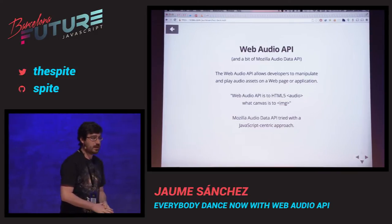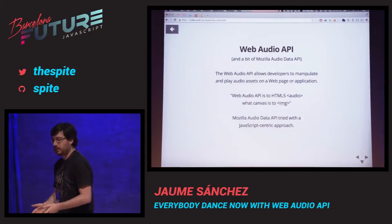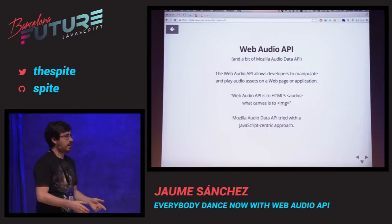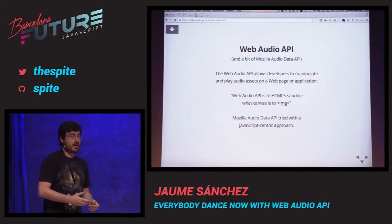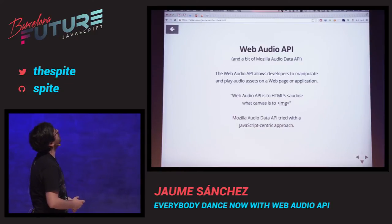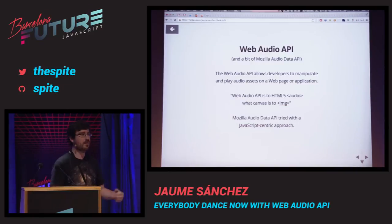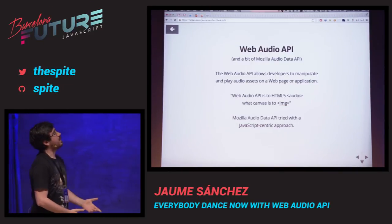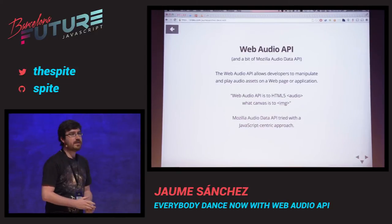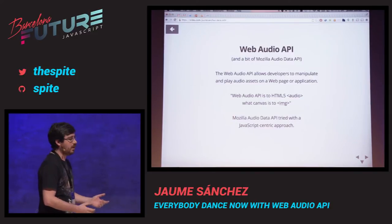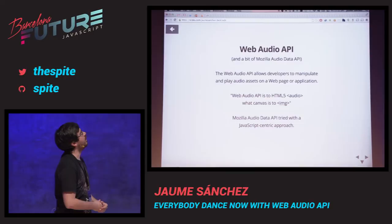For a while there was the Mozilla Audio Data API, which proposed a different approach. They wanted everything to be made with JavaScript, so your frequency analysis or your filters would be JavaScript code, while the Web Audio API provides a native approach to all these basic functions when you deal with sound processing. Web Audio provides developers the ability to manipulate and play audio assets on web pages or applications. Some people have said Web Audio is to HTML5 audio what Canvas is to the image element, but Web Audio API provides way more features than Canvas.